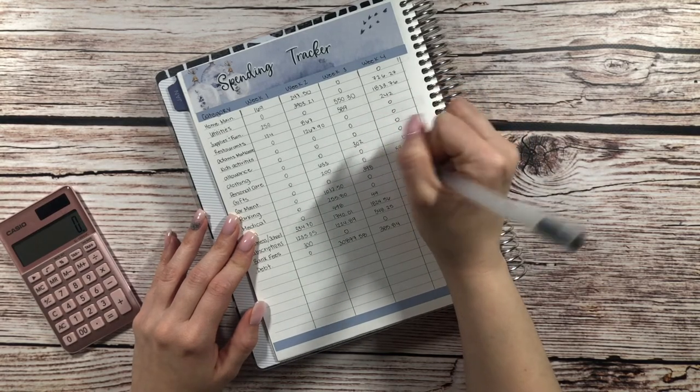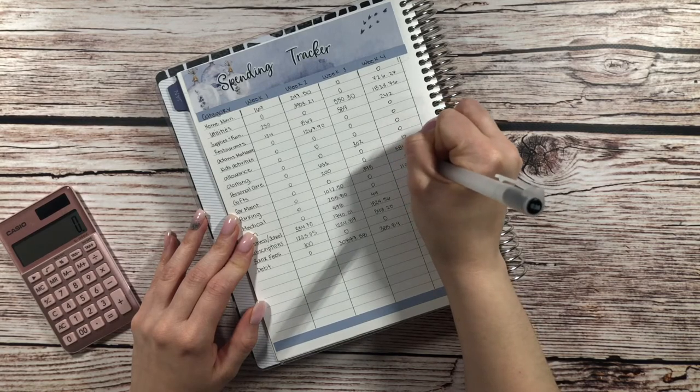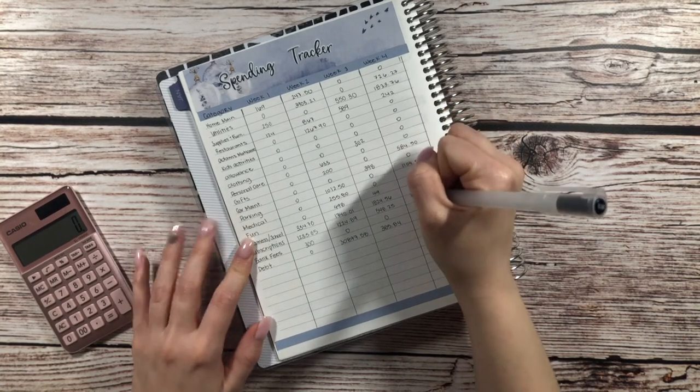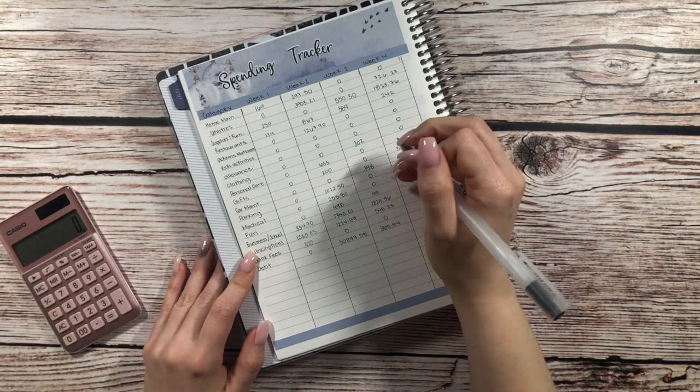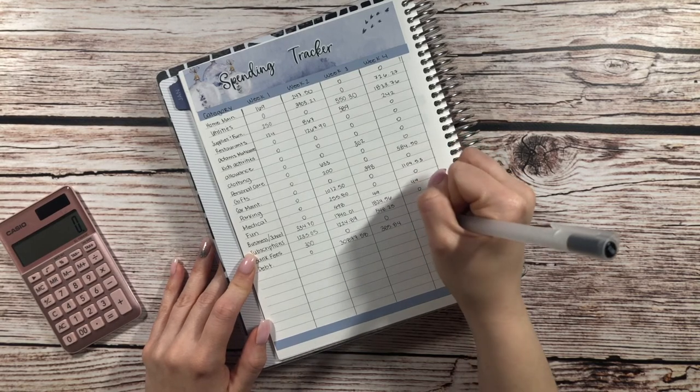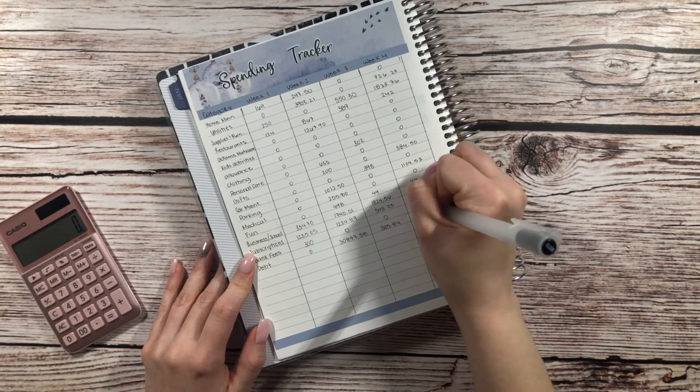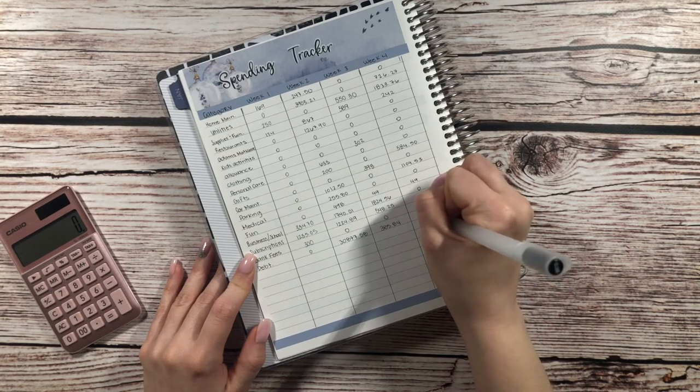Car maintenance, zero. Parking, $1,453.00. Medical, zero. Fun, $49.00. Nothing for business or school. Nothing for subscriptions. $391.00 for bank fees. And $400.00 for debt.